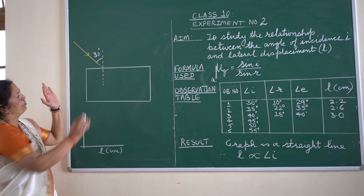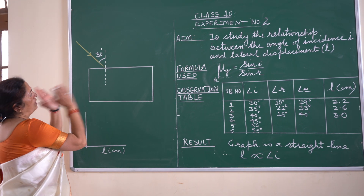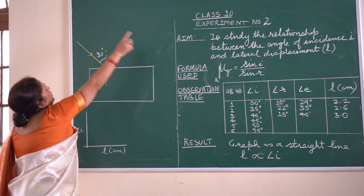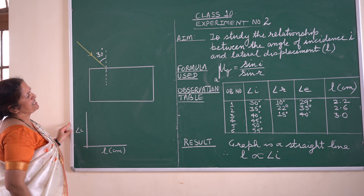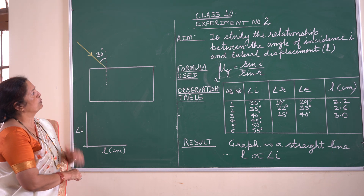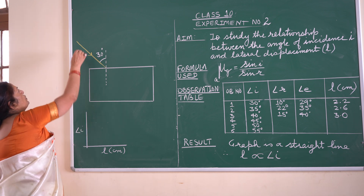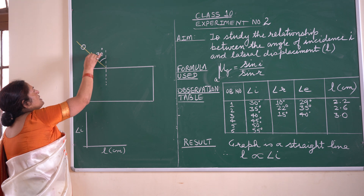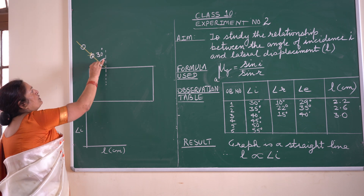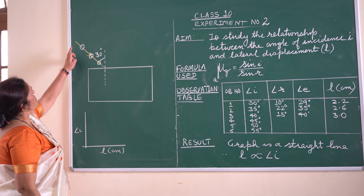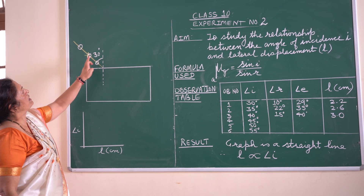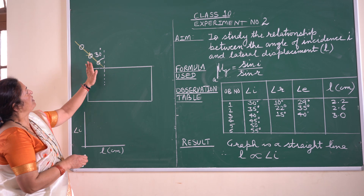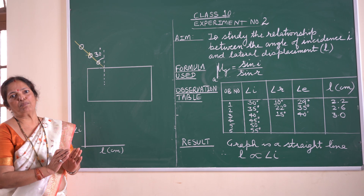Then you fix this paper on the hardboard using four thumbnails at the corners, and then you put three pins — one pin here, a second pin here, and a third pin here. This ray makes a 30° angle with the normal. You will measure whichever angle you are taking with the help of a protractor.